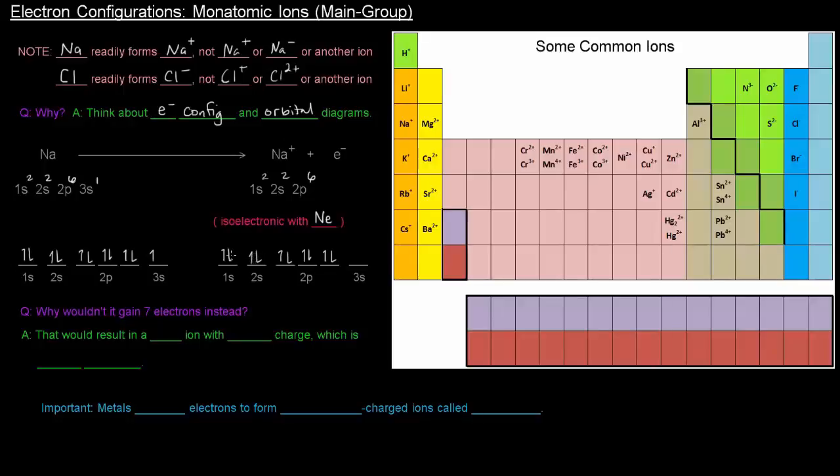Some people might ask: it can lose one electron to have a noble gas configuration, why can't it just gain seven electrons and have the configuration of argon instead? Well, if it gains seven electrons, it would have argon's configuration but would result in a -7 ion with more charge, which is not stable.